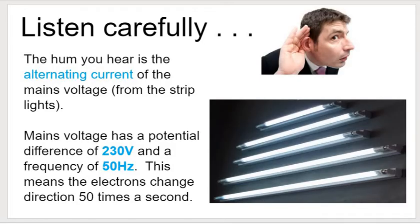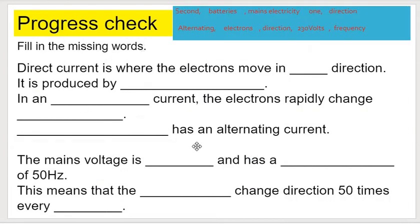As we are working you could hear alternating current, which is the humming maybe of your laptop, or the humming of the light that's switched on near you. Meaning that the current is flowing back and forth, back and forth. You're going to write down this blank paragraph and then fill in the missing answers. There's some help here for you. Pause the video and write this down please.